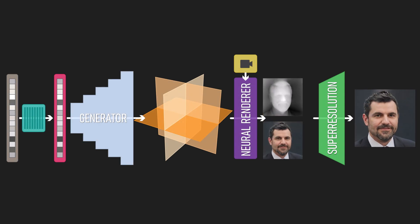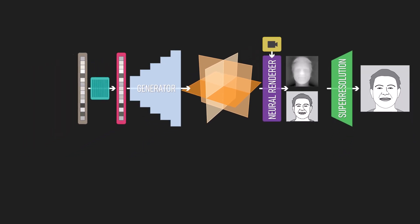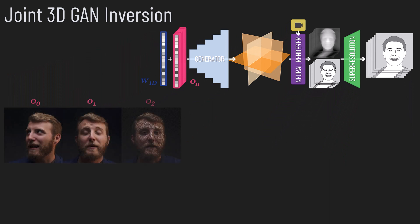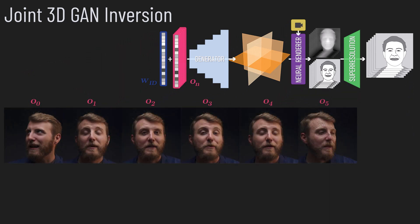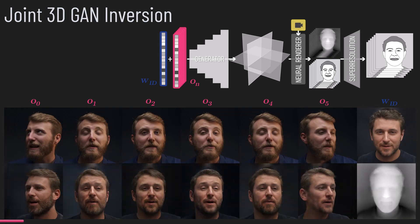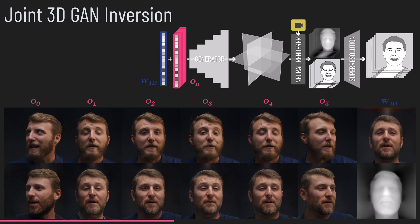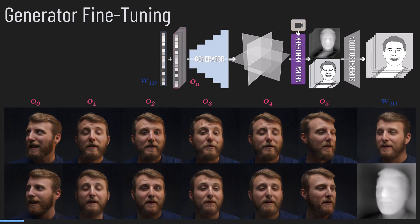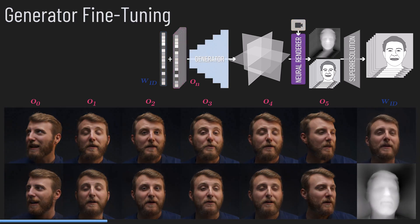With this architecture, we can change the viewpoint and examine a 3D representation of a face. In order to edit a video, we propose a joint GAN inversion strategy to build a personalized generator. Given a set of viewpoints and facial expressions of a person, we invert them simultaneously. Each latent is a combination of a person latent W_ID and a regularized offset O. We also automatically infer the camera viewpoint during this optimization. We then fine-tune the generator and the neural renderer to capture the fine details of the target person.